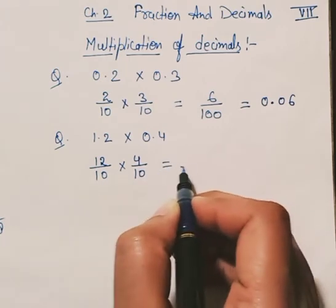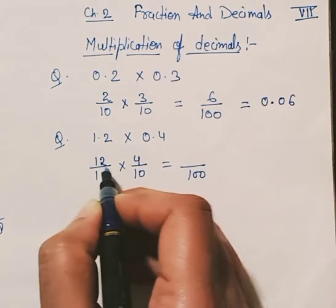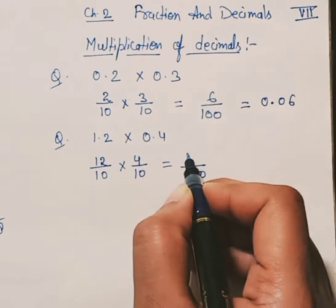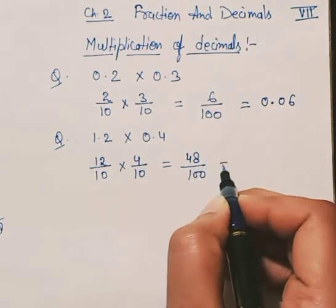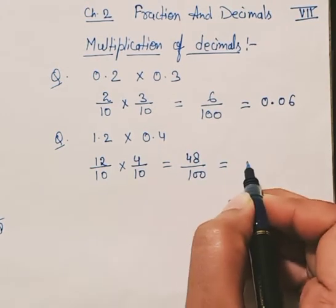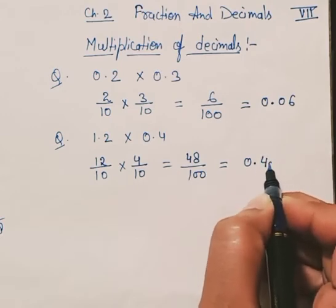10 times 10 gives you 100, and 12 times 4 is 48. Convert it into decimal and you have the answer: 0.48.